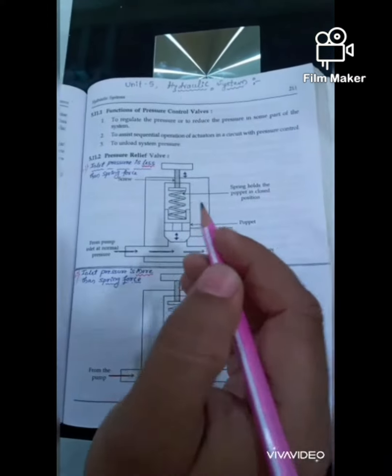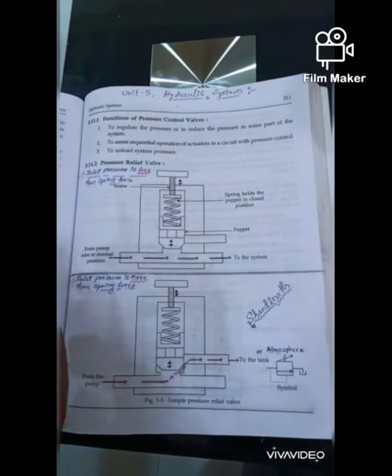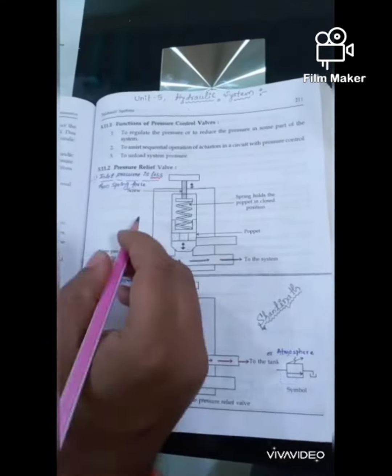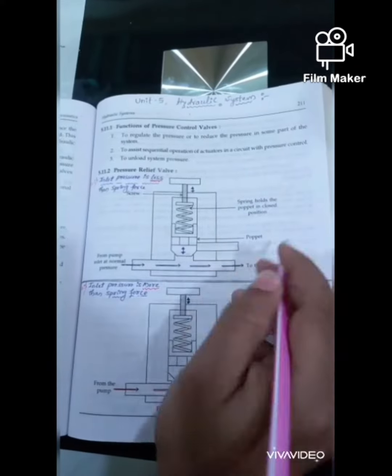You will understand when we see the construction and working. You have to draw both diagrams in the exam. So first point in construction and working is that it consists of an adjustable screw, a spring, and a puppet.